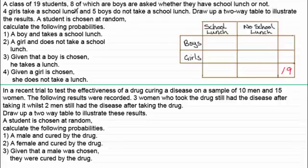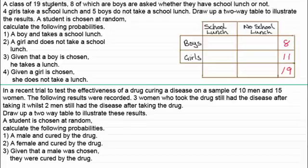We're told of these 19 students eight are boys, so we put eight in the cell for the total of all boys, and obviously that leaves us with a total of 11 girls. When the students are asked whether they have school lunch or not, we're told that four girls take a school lunch, so we put four there. And five boys do not take a school lunch, so that five goes there.